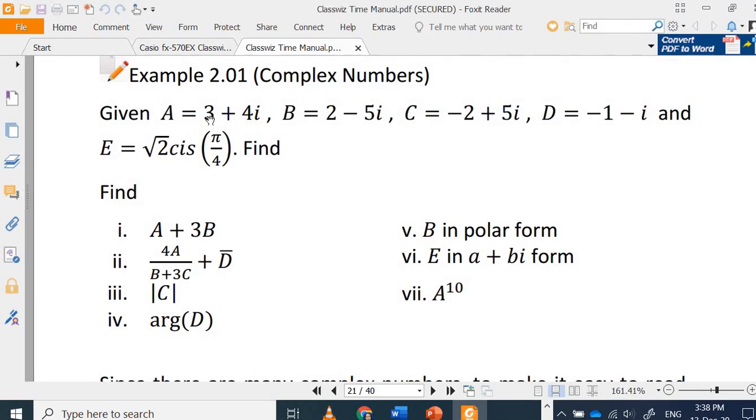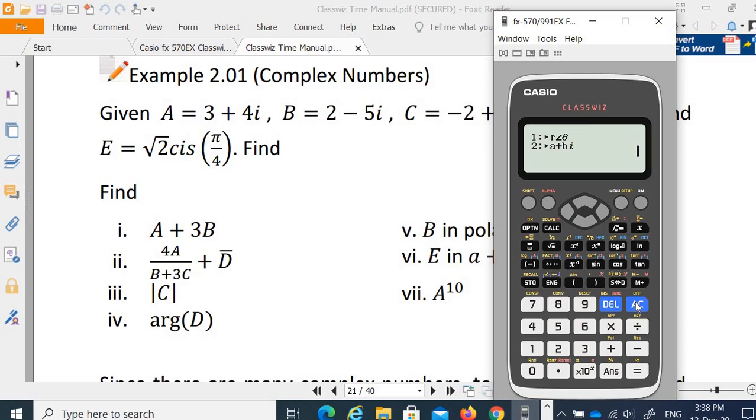If you want to key in 3 plus 4i, you can put it to A, B, C, or D. I want to key in 3 plus 4i and save it into variable A. So key in 3 plus 4i. I want to save it into variable A. So shift STO, variable A is here on top. So 3 plus 4i is stored in A.